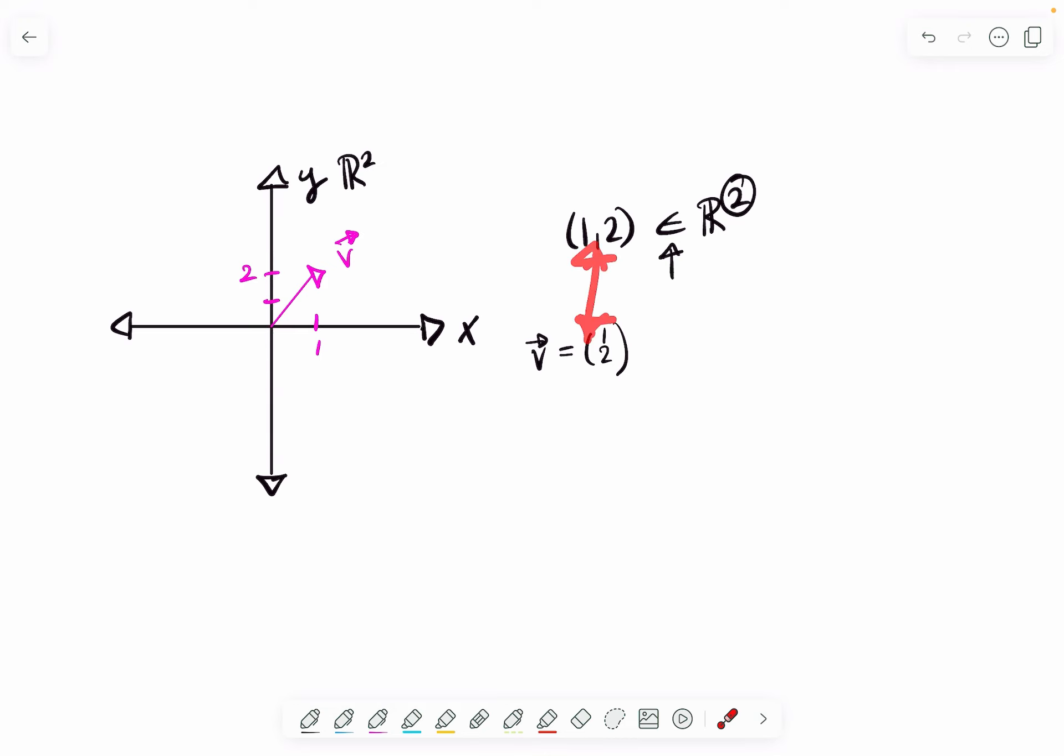But then the question is: if these are visually the same, why introduce a vector? Well, the idea is because you can start it somewhere else. This vector is the same if it were up here. Just because it starts at this point doesn't mean it's different.